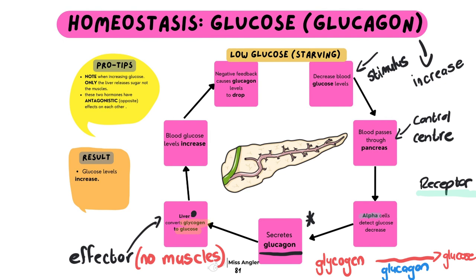Let's get back into our homeostatic control loop. Once the liver has converted glycogen to glucose, we now have a response where blood glucose levels are going to increase, which means we can still be efficient. Finally, there is a negative feedback loop — because once we have enough sugar, glucagon levels are going to drop. You don't want to keep using all your stored sugar, so once sugar levels are back to normal you stop secreting glucagon, and that's why we call it negative feedback — you're increasing the amount, then decreasing, then increasing, then decreasing, allowing you to hover at a nice norm.